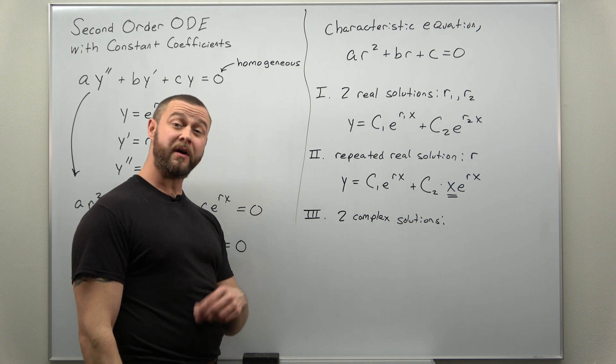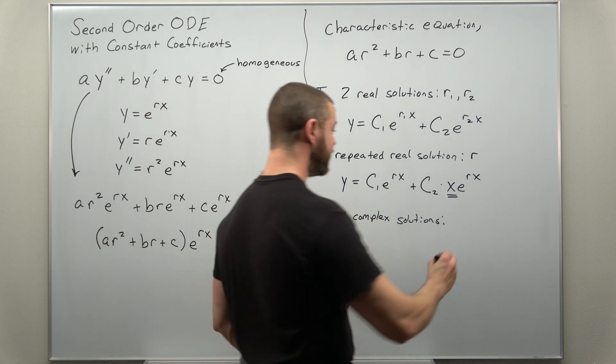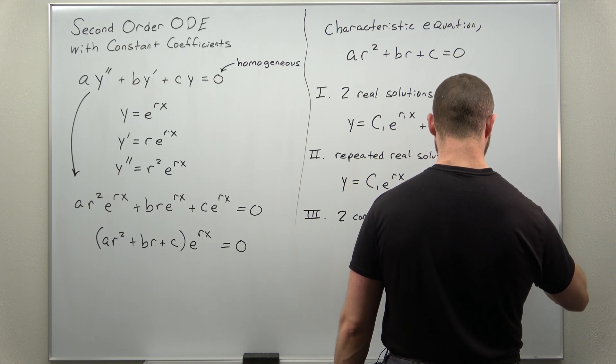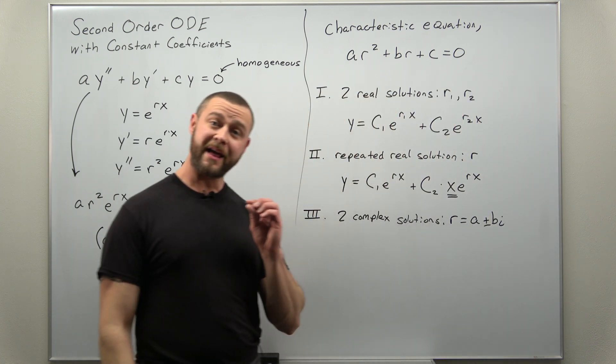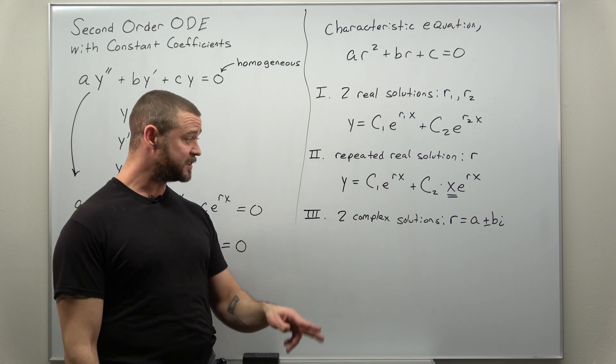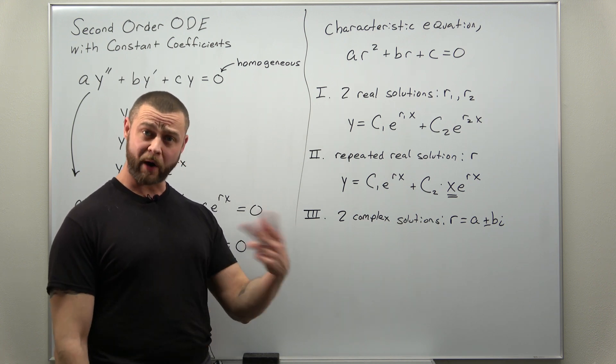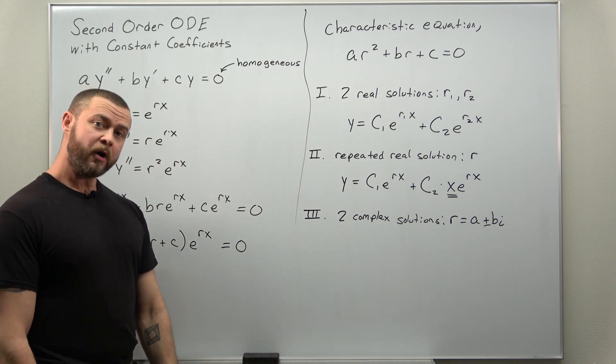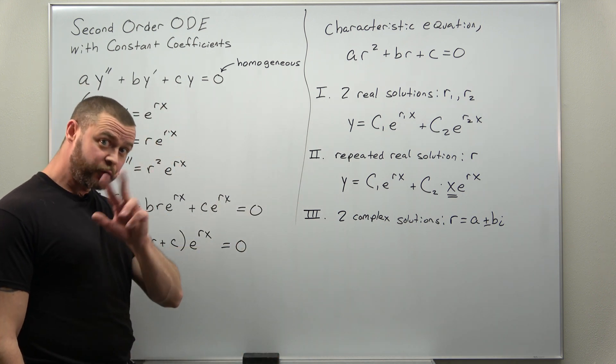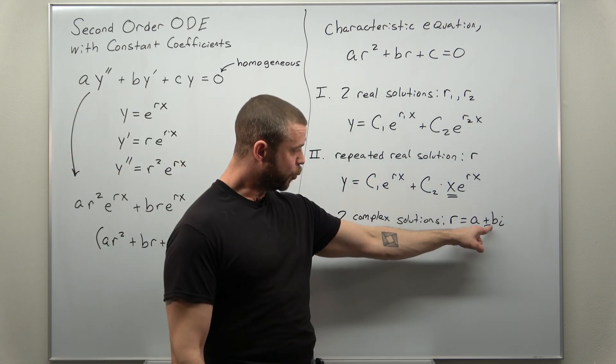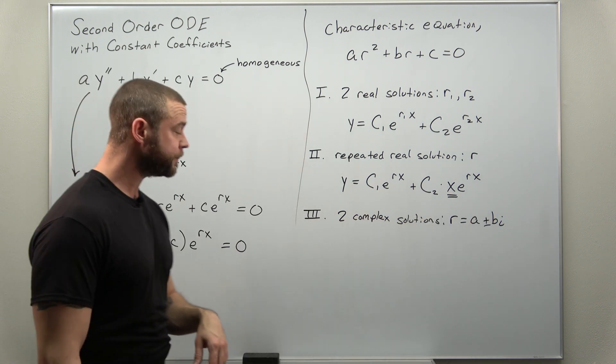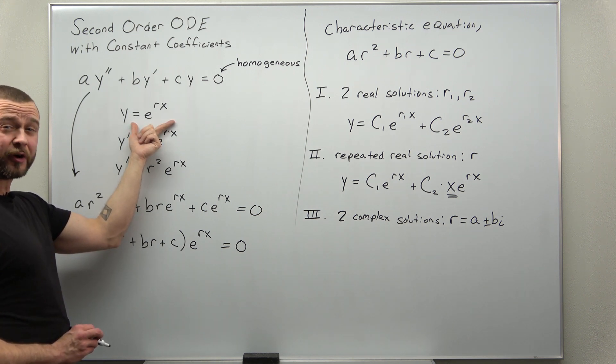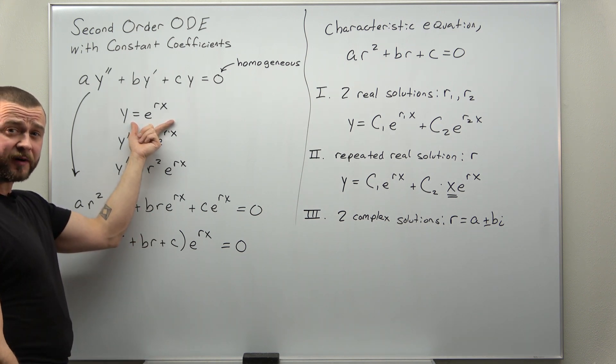And we're going to write this in the form of a complex number. Your values for r look like a number a plus or minus b times i, where i is the square root of negative one. All right, now those are two different values for r, one with the plus, one with the minus. And usually we don't like to use complex or imaginary numbers in exponential functions.